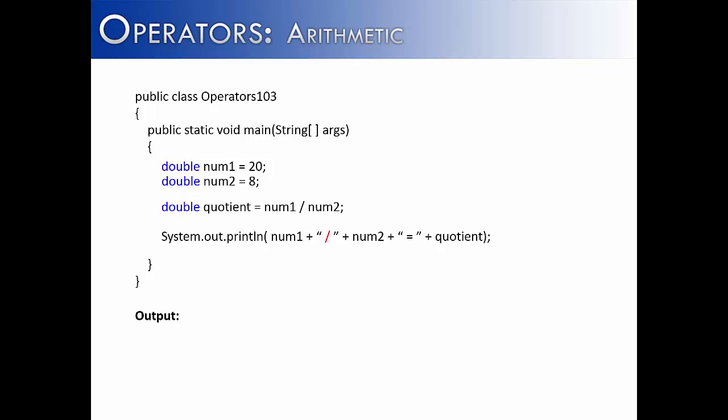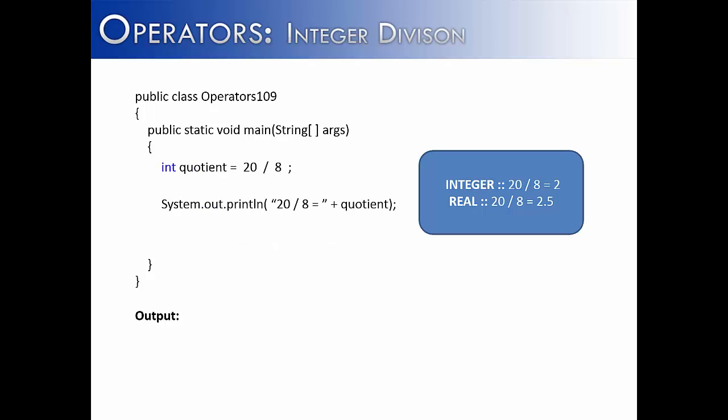Now, what if we made all of the values into doubles? Would this work? Absolutely. It would give us 20.0 divided by 8.0 is 2.5.